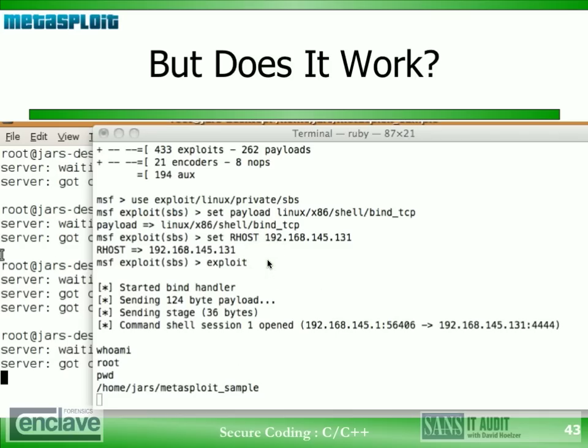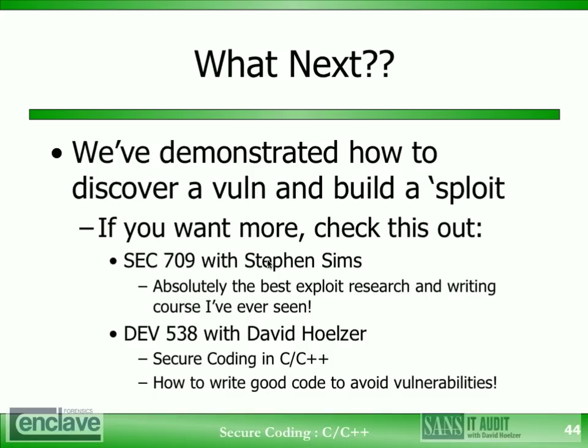We're not going to do anything more than this — we can see the example here; it's actually run the exploit and we just did that ourselves. This is it for our tutorial. If you're interested in more information on exploits and exploit development, take a look at the Security 709 class by Stephen Sims. It is absolutely the best class I have ever seen when it comes to exploit development. He covers every modern technique in use for defeating all of the modern techniques for protecting our code. If you're on the development side or more on the security side, you might be interested in our secure coding class in C and C++. This is just an example of the kinds of vulnerabilities that are possible, and in the class we discuss all of the information you need on how to protect yourself from the common coding errors that occur in our organization's code.